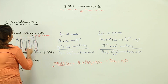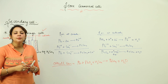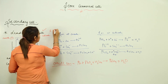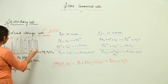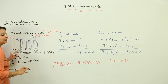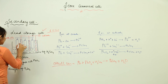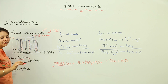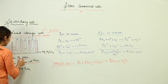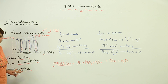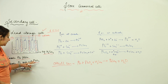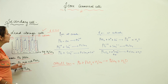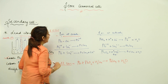An example is the lead storage cell, formed by the combination of two or three cells connected in series to generate a voltage of around 6 to 12 volts. In this cell, the blue plates are lead acting as the anode, the blue plates with red lines are a lead grid with PbO₂ acting as the cathode, and the aqueous H₂SO₄ shown in black is the electrolyte.